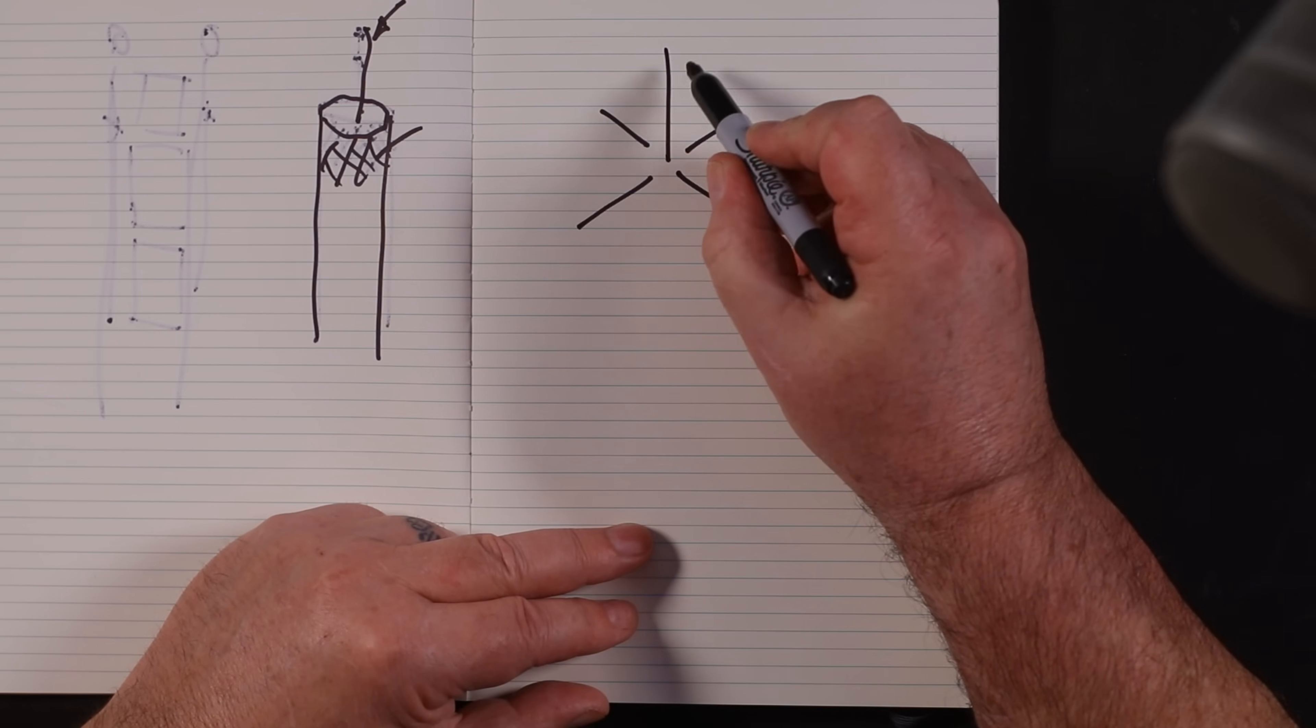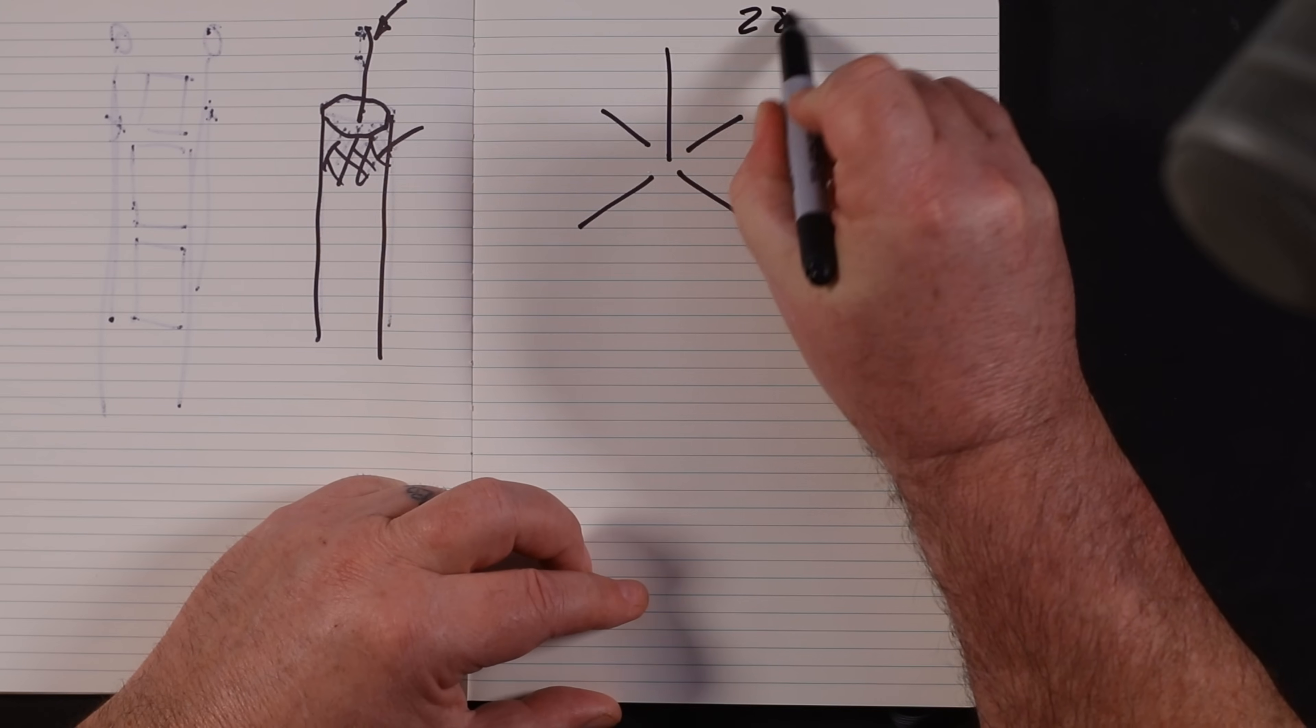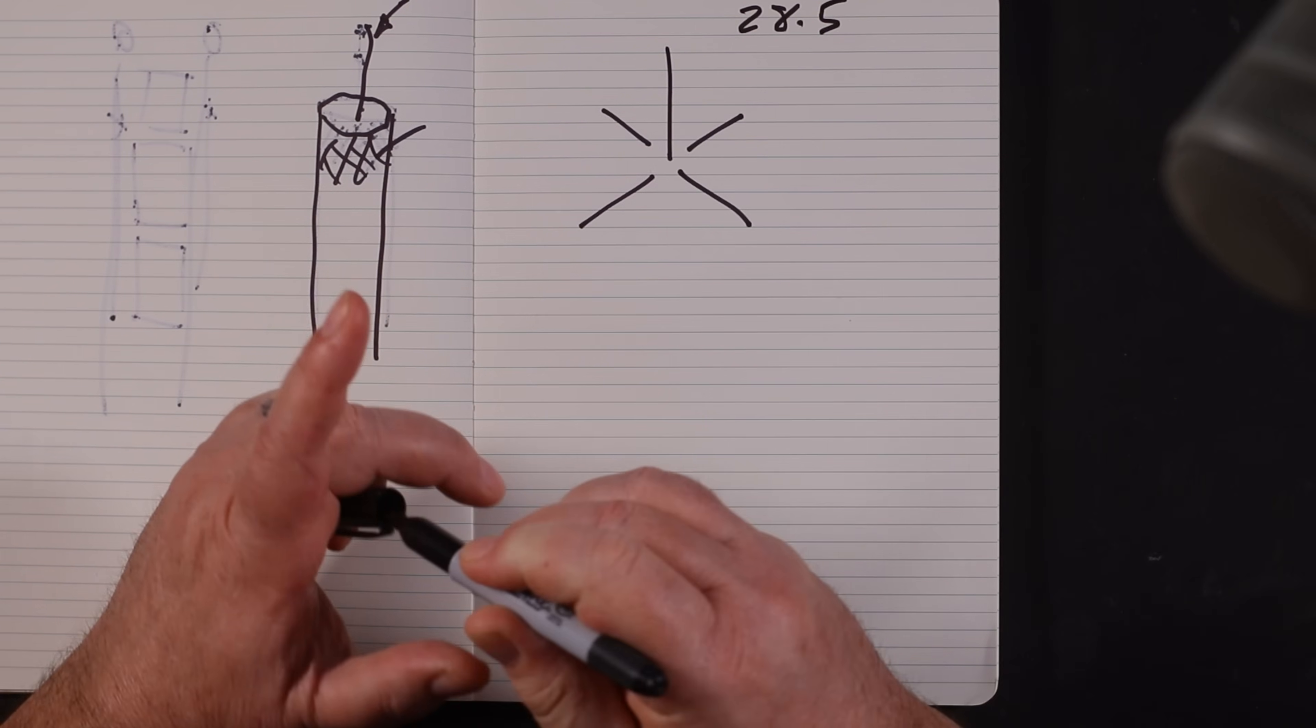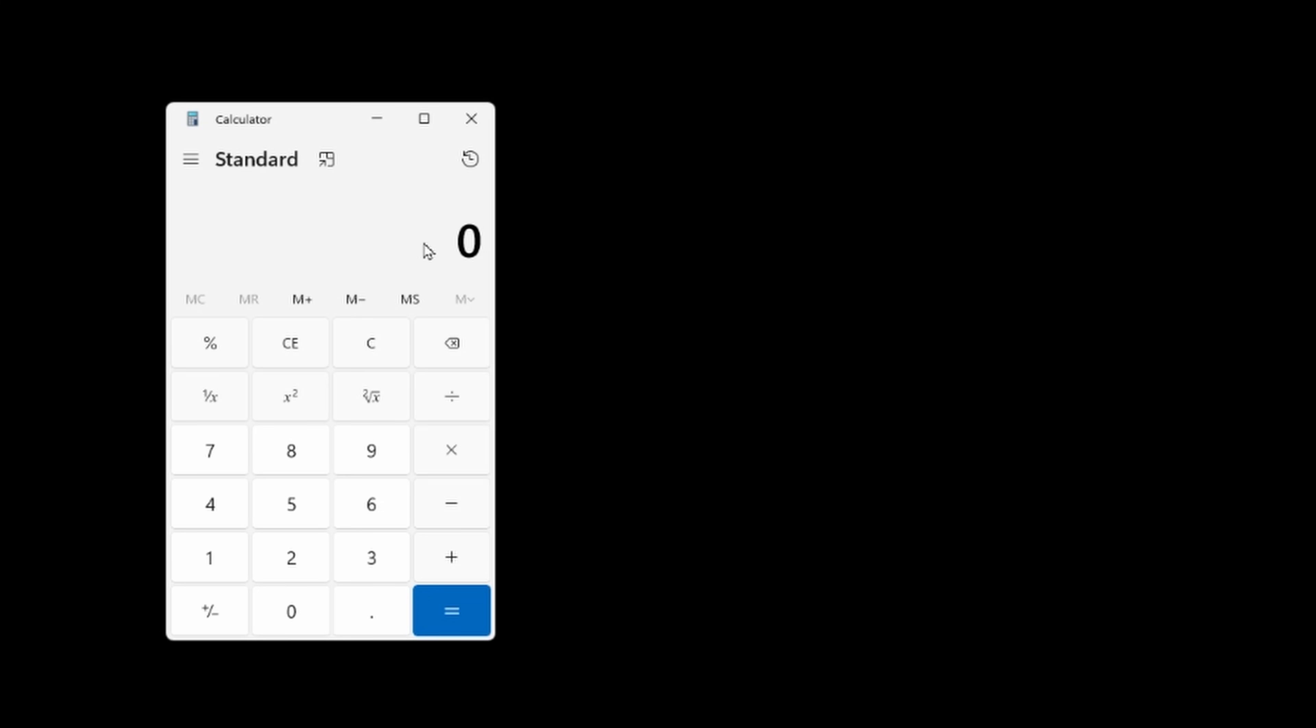A quarter wave ground plane basically looks like this, with this being a quarter of a wavelength. Now we did wavelengths and frequencies in a longer video. So if we're aiming for 28.5 megahertz, you remember what we did last time - we start off with 300 and we divide it by 28.5, and that is the wavelength: 10.526.